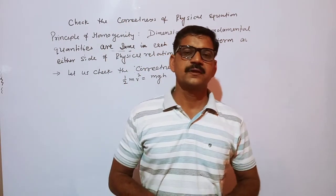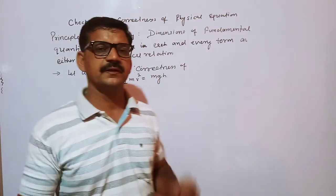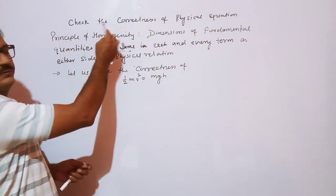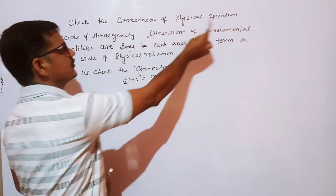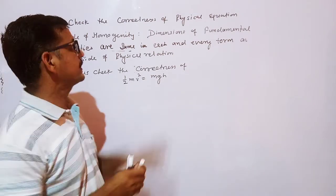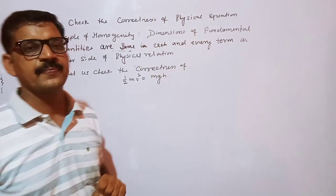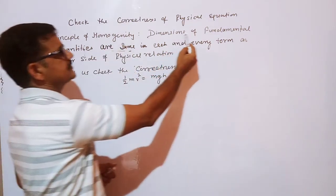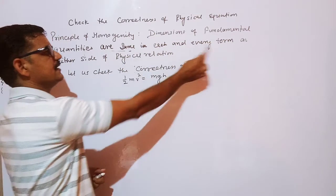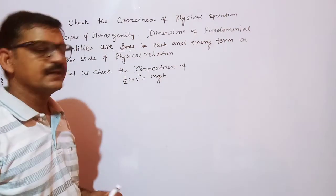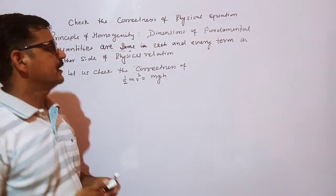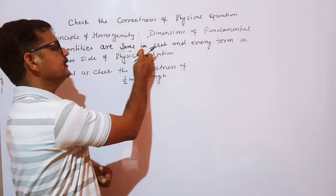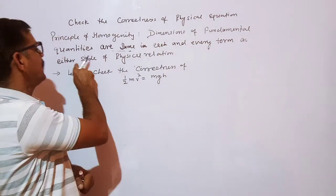Hello students, today we are going to discuss the uses of dimensional equations. There are three uses of dimensional equations, but in this video we will discuss the first use: to check the correctness of physical equations using dimensional equations. For that, we use the principle of homogeneity, which states that dimensions of fundamental quantities are same in each and every term on either side of a physical relation.